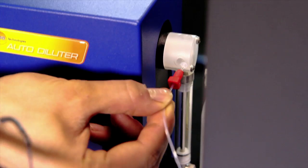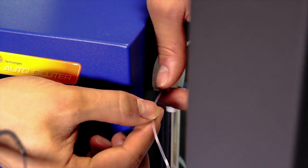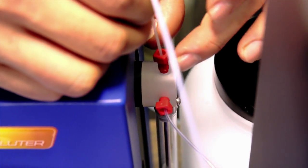Connect the sample buffer coil to the left of the dual loop valve of the auto diluter. Connect the suction of the peristaltic pump to the top of the dual loop valve on the auto diluter.